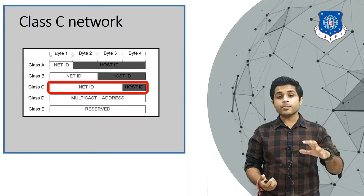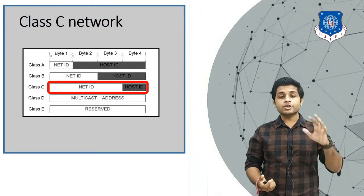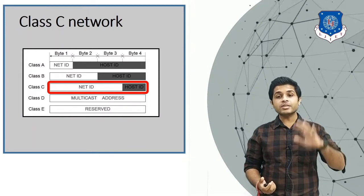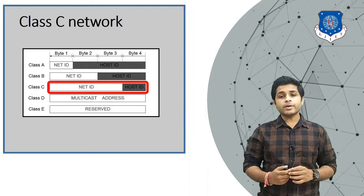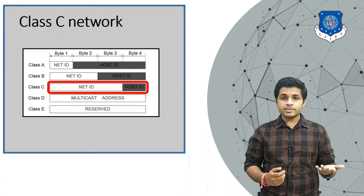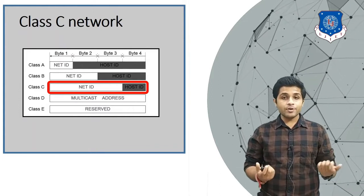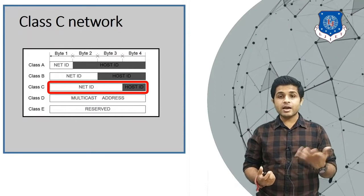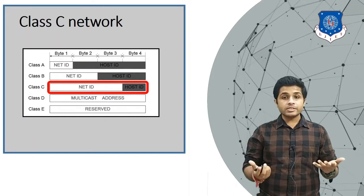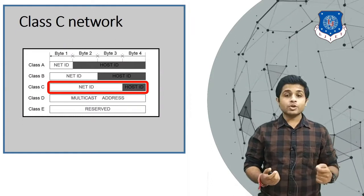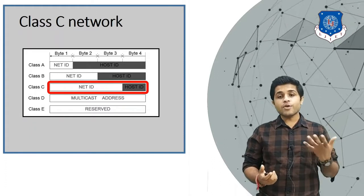In one network, the Host ID is 8 bits, so 2 raised to 8 hosts are possible, meaning 256 IP addresses. You can create a network of 256 devices. But what if you want to create a network smaller than that — say, only 128 devices? If you purchase one Class C network, the remaining IP addresses will be totally wasted. That is the reason why we need to do subnetting — it is simply the process of dividing a network into smaller parts.